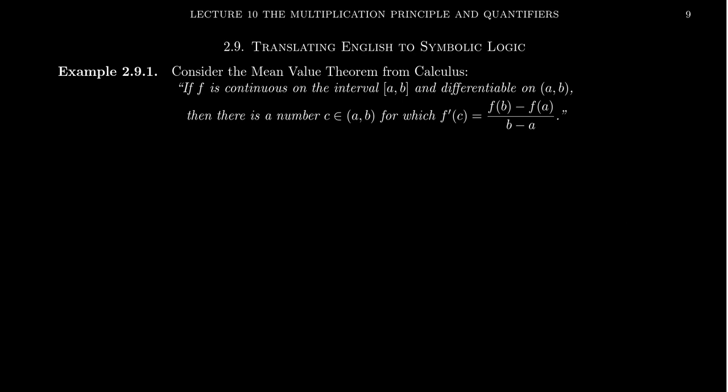So let's take the statement of the mean value theorem from calculus one. In case you don't remember what that says, it's the following. If f is continuous on the closed interval a to b, and it's a differentiable function on the open interval a to b, then there is a number c that belongs to the open interval a to b, such that the derivative of f evaluated at c is equal to the slope of the tangent line there, f of b minus f of a over b minus a.